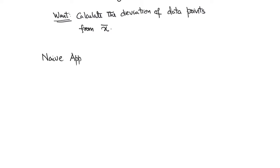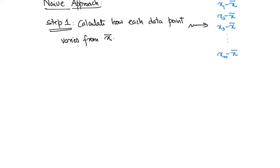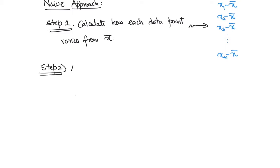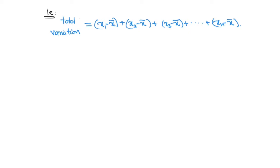A naive approach is as follows. We first calculate how each point varies or deviates from x-bar and we note each of these individual deviations as x1 minus x-bar, x2 minus x-bar, all the way up to xn minus x-bar. Now to get the variation, we just add up each of these individual deviations together. That is, the total variation is the sum of x1 minus x-bar plus x2 minus x-bar plus x3 minus x-bar, all the way up to xn minus x-bar. We call this a naive approach because it has problems.